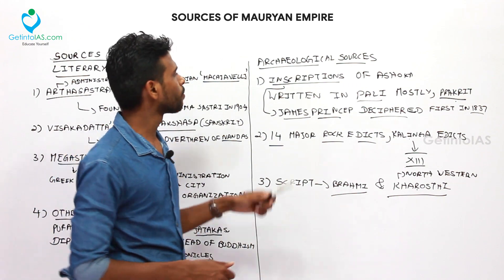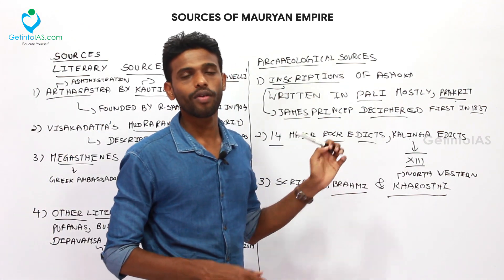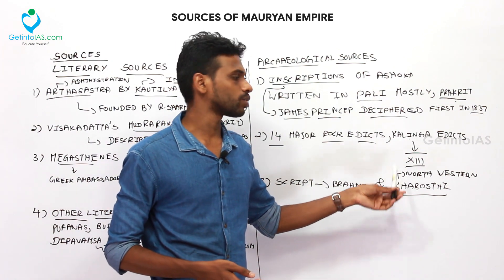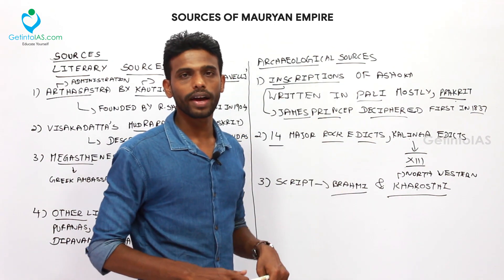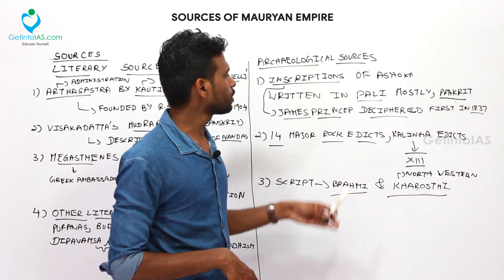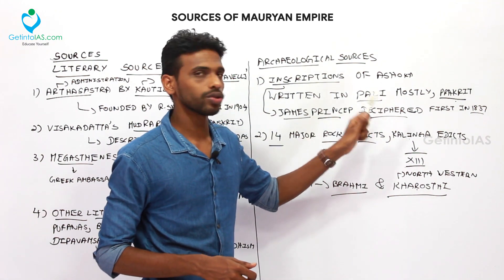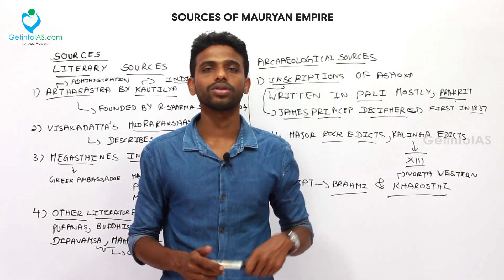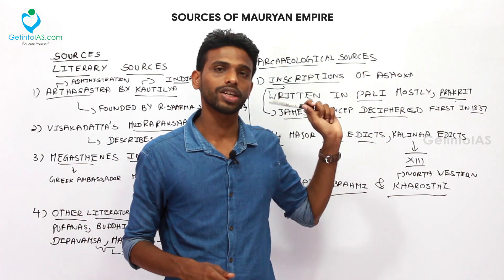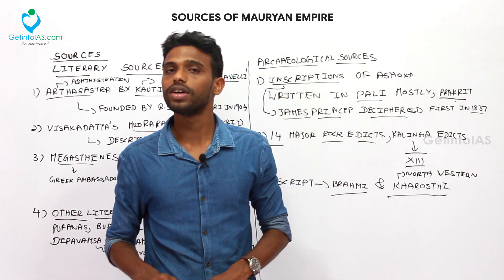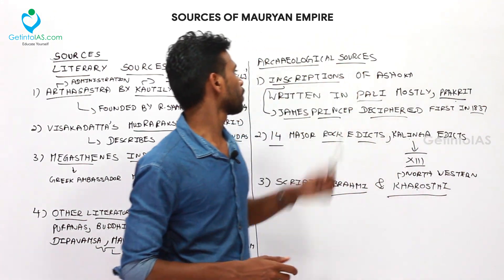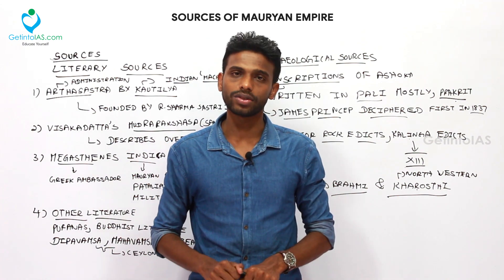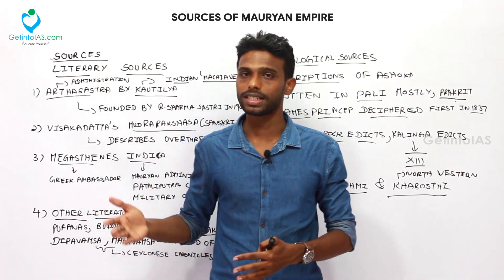Coming to archaeological sources: inscriptions of Ashoka were found in many parts of India, written in Brahmi and Kharosthi scripts. Kharosthi was used in the northwestern part of India, while Brahmi was widely available in many rock edicts. Pali and Prakrit were the languages used, with Pali mostly used and Prakrit less common. Ashokan script was the first in India to be deciphered — in 1837, while the Harappan script was not deciphered. These archaeological and literary sources give us many details of the Mauryan Empire that will be seen in subsequent lectures.